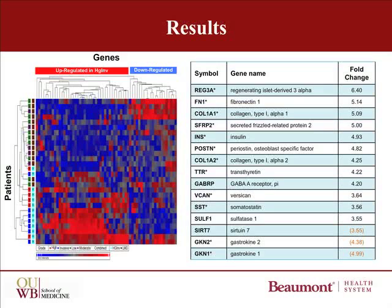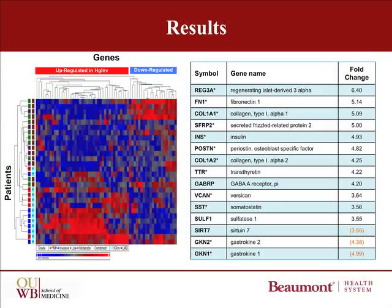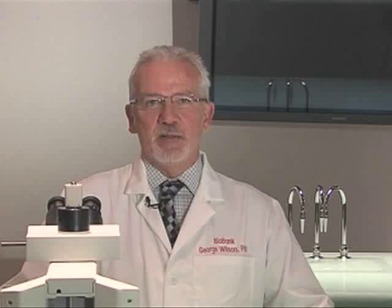Some of the genes are listed in the table, and many of them are involved in the normal function of the pancreas gland. What is interesting, though, is that some of them code for secreted proteins, such as insulin or gastrokin. This means that it may be possible in the future to develop a blood-based test to detect them and help in the surgical decision-making as an early biomarker for the risk of cancer.